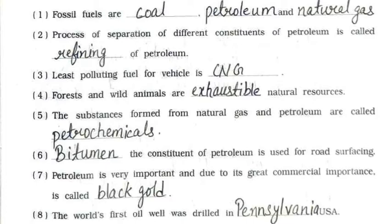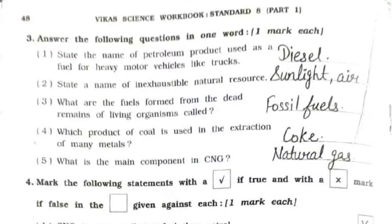Fourth: forests and wild animals are exhaustible natural resources. Fifth: the substances formed from natural gas and petroleum are called petrochemicals. Sixth: bitumen, a constituent of petroleum, is used for road surfacing. Seventh: petroleum is called black gold due to its great commercial importance. Eighth: the world's first oil well was drilled in Pennsylvania, USA.